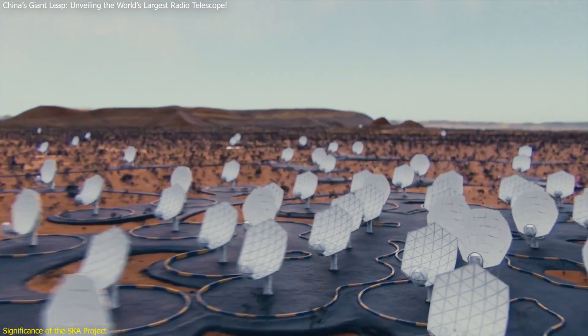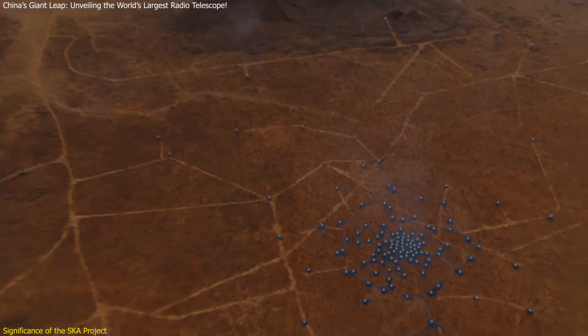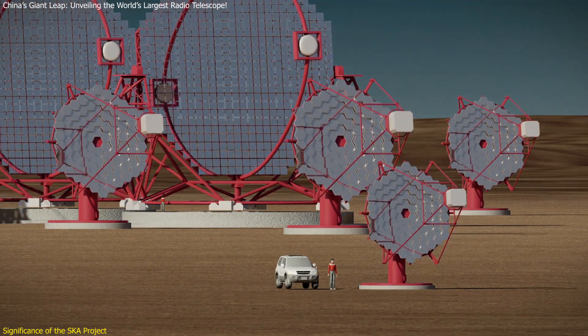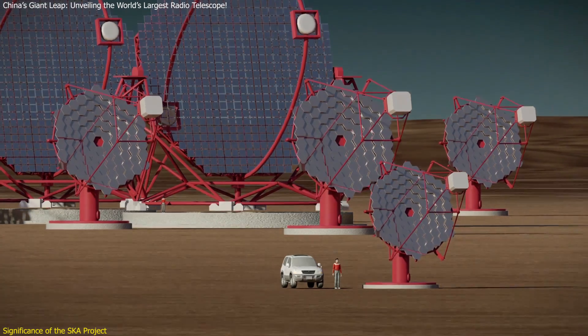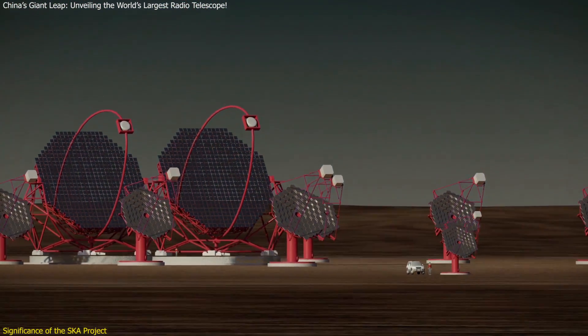The SKAO will consist of thousands of radio antennas located at multiple sites across Africa and Australia. When completed, the SKAO will cover a total collecting area of one square kilometer, making it the most extensive radio telescope array to date.